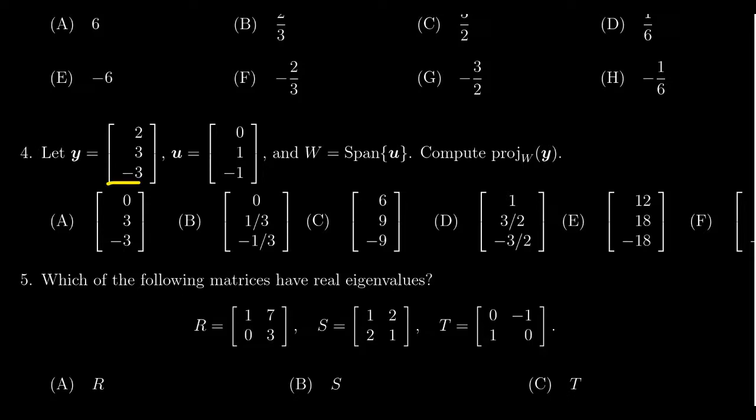We're given another vector u whose coordinates are 0, 1, negative 1. And we're told that W is the span of u. So we think of W here as the line passing through the origin in the direction of u, the line spanned by u.